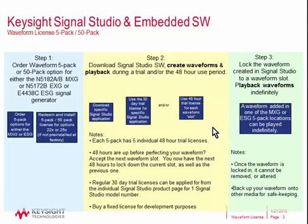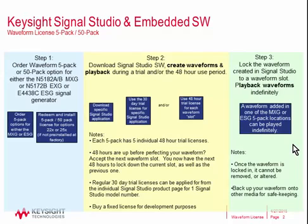Once you've created the waveform and downloaded it — either via USB stick if your vector generator has a USB port, or via GPIB or LAN directly from Signal Studio — you accept the trial and play it out. You have to do that from the front panel if you're using the 48-hour trial. You can make adjustments and re-download the waveform any number of times until you get it right, then lock the waveform down to make it permanent. It is strongly recommended that after locking, you back up your waveform to the internal non-volatile memory of the vector generator and also copy it to another media type such as a USB drive or FTP it to a PC.